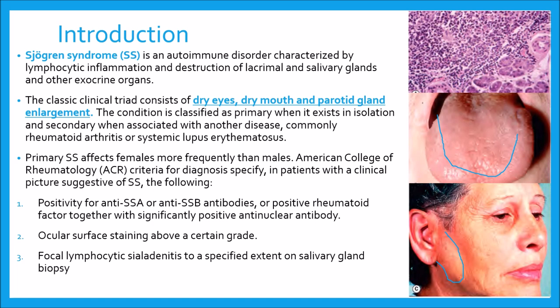Treatment options for Sjogren's syndrome include a range of symptomatic treatments for dry eyes, dry mouth, and other manifestations. Salivary stimulants, for example oral pilocarpine, and in some cases immunosuppression and biological blockers such as Rituximab are also used.